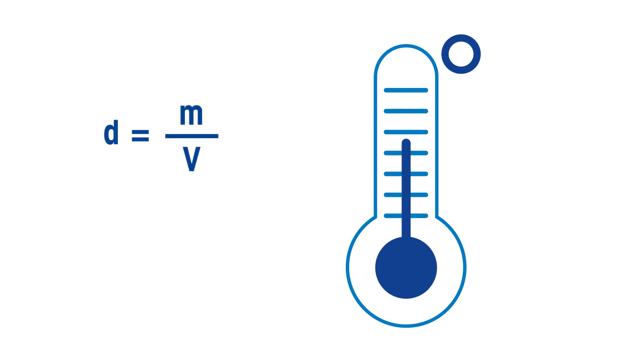Did you know that the volume of a liquid increases with temperature, even though the mass stays the same? This is because in all liquids — except water — heat agitates the molecules, spreading them apart, which causes an increase in the volume of the liquid. This is how thermometers work: when temperature increases, the mercury expands up the tube and you can read the temperature.